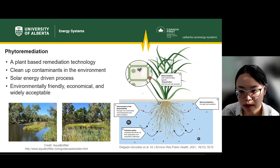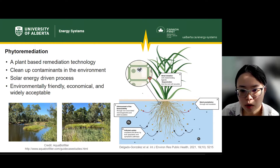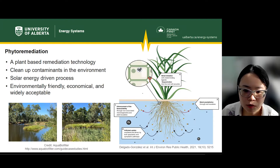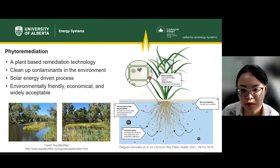Plants can absorb contaminants through their root system. After contaminants enter root cells, they can be translocated to shoots through xylem vessels. Some plants can accumulate and modulate the bioavailability of contaminants by forming complexes with various organic acid chelators in plant tissue. Therefore, contaminants are broken down into non-toxic forms and removed from the environment.